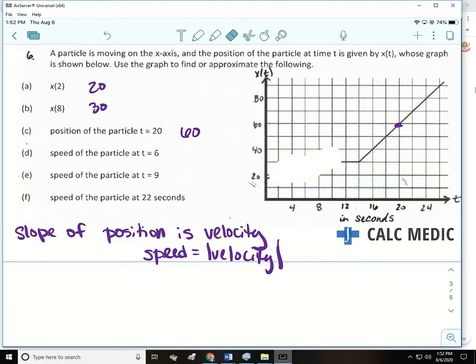We want to find the speed of the particle at T equals 6. T equals 6 is right here. So what we want to do is find the slope of the line right there. So what is the slope of that line? It's the rise over the run. Pay attention to the units. To get from here to here, you go up how many? 10. And then over 6. So 5 thirds of a unit per second.